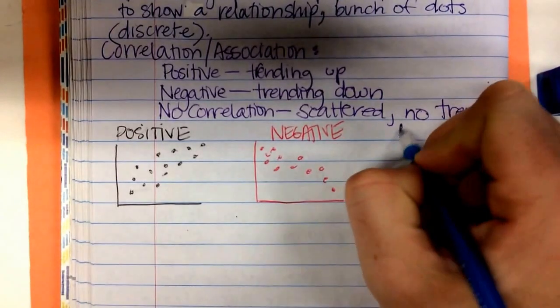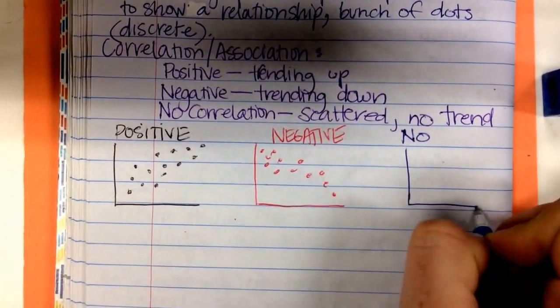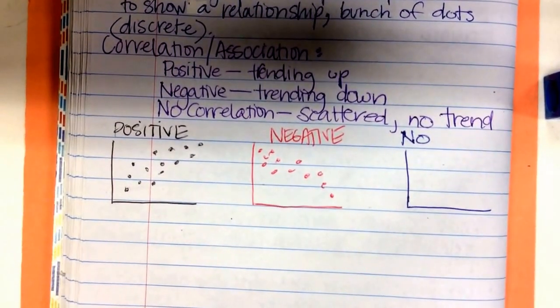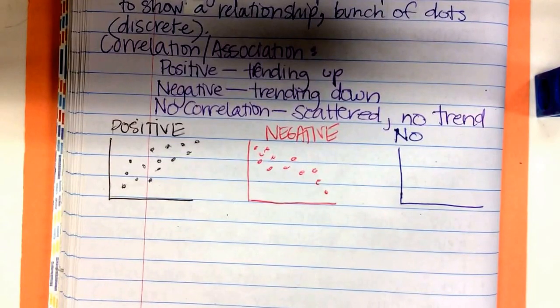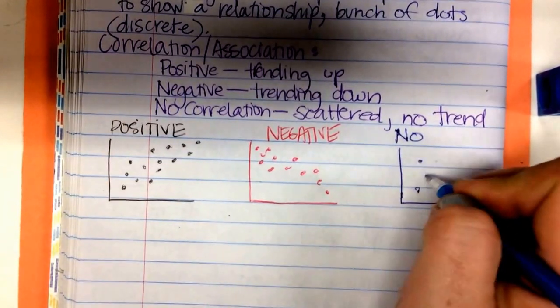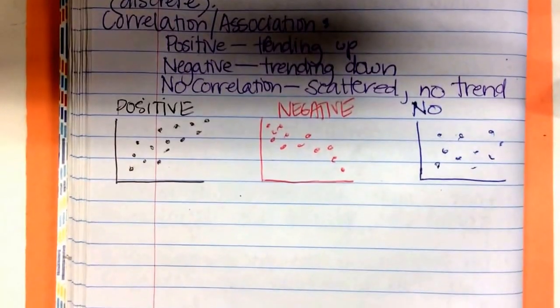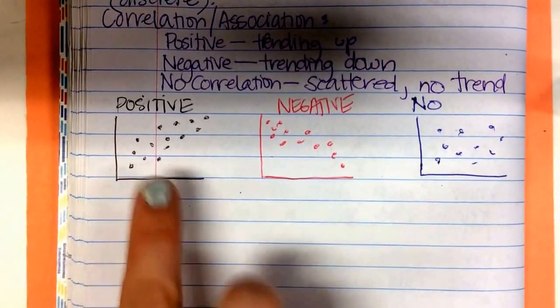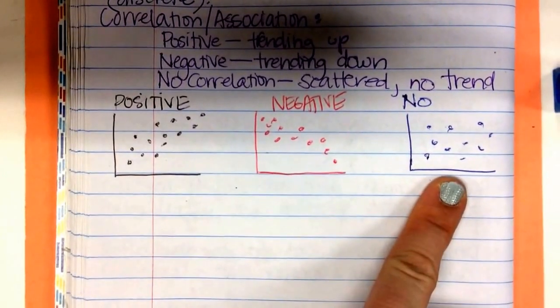And then last but not least is no correlation. What's that going to look like? Yeah, just dots kind of all over the place. Positive correlation, negative correlation, no correlation.